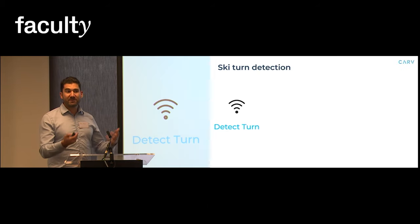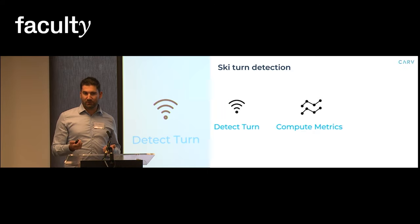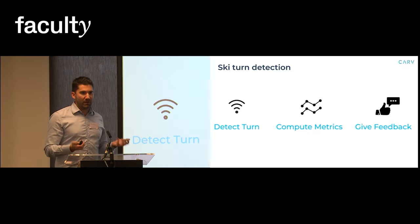The CARV engine processes your data and decides when you did a turn. After you did a turn it computes the performance metrics based on that turn and you will get the feedback for your turn afterwards.